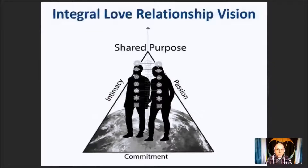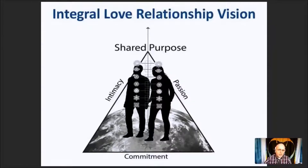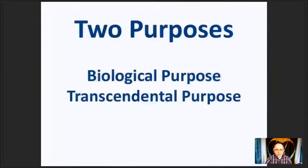The whole series of our web jams furthers the Integral Love Relationship Vision, symbolized in this image: couples in integral relationships with a shared purpose that makes the world a better place, who also share intimacy, passion, and commitment. As we go further into the series, we will dig deeper into what's in the center of that image — shared purpose and intimacy shared across all four quadrants along all seven chakras. Today we focus specifically on how to identify our purpose.